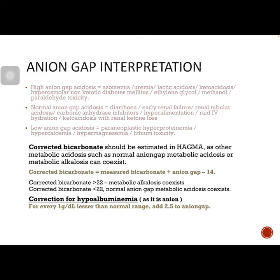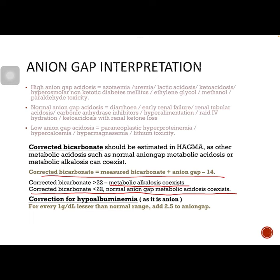Anion gap is considered only when there is metabolic acidosis. Based on the calculated results, anion gap can be classified as high, low, or normal. If anion gap is high, you need to check corrected bicarbonate, as high anion gap metabolic acidosis can coexist with normal anion gap metabolic acidosis or metabolic alkalosis. The formula is: measured bicarbonate + anion gap − 14 = corrected bicarbonate. If corrected bicarbonate is more than 22, metabolic alkalosis is happening simultaneously. If corrected bicarbonate is less than 22, normal anion gap metabolic acidosis is happening simultaneously.